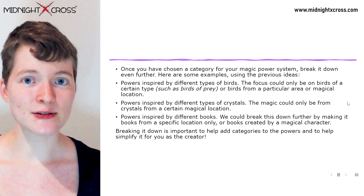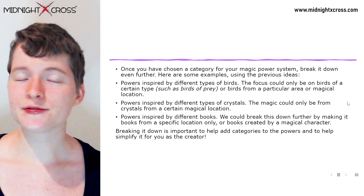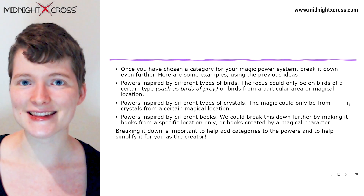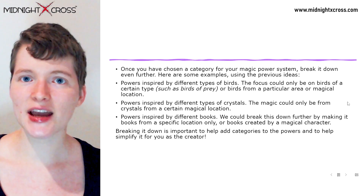For powers inspired by crystals, the magic could come only from crystals of a particular location. For powers inspired by books, it could be books from a specific location or magical books created by a specific character in your world. Breaking down a magic power system into categories helps you better understand how to present it and how characters may use their abilities. I also recommend considering how those different categories look — maybe using a color coding system where different abilities have different colors, or having characters wear different outfits inspired by the power system.